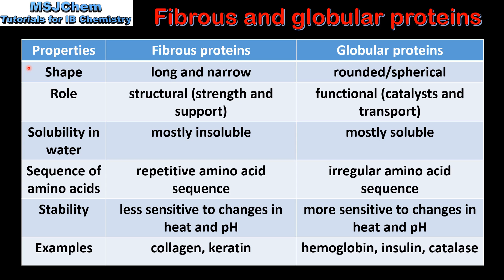Next we'll compare fibrous and globular proteins. Starting with the shape: fibrous proteins are long and narrow, globular proteins are rounded or spherical. Next, their role: fibrous proteins are used for strength and support, globular proteins are used as catalysts and for transport.